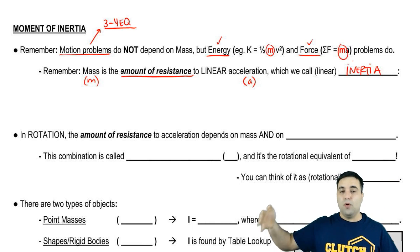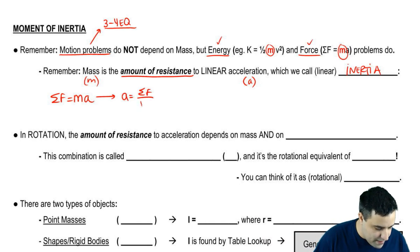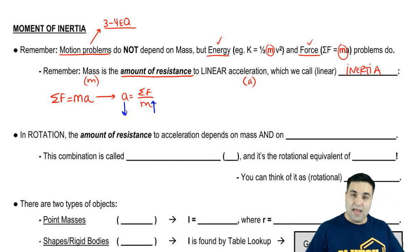Inertia means you want things to keep going the way they're going. You want to resist change. I can show you real quick how this looks like. Sum of all forces equals ma. I can rewrite this as A equals sum of all forces over m. So notice that the greater my mass, the smaller my a.